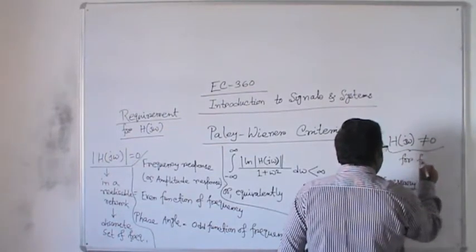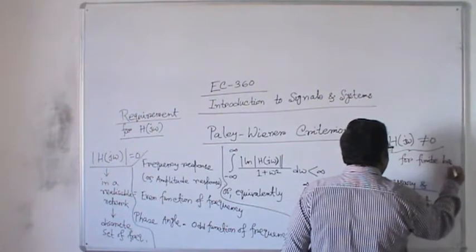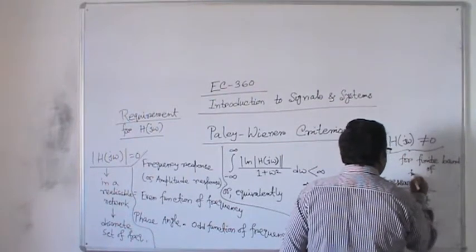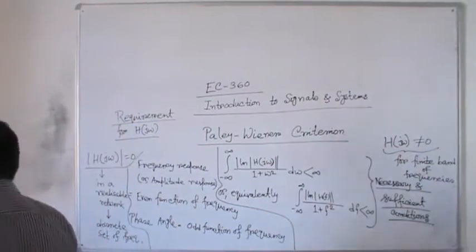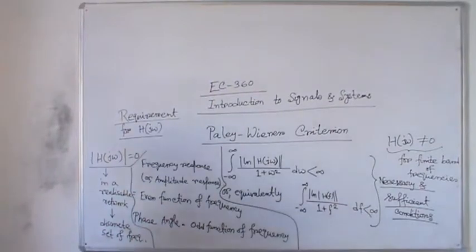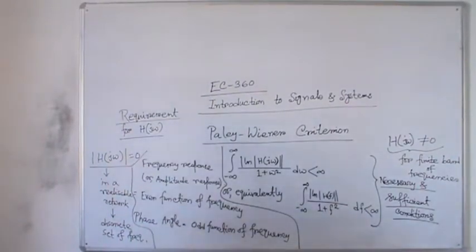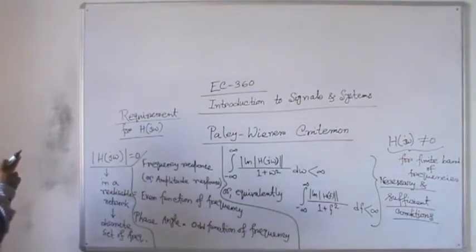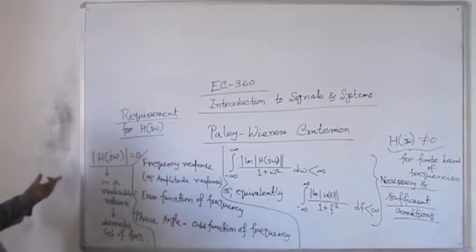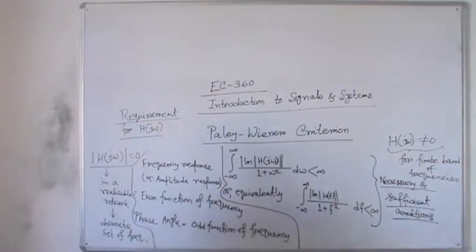It cannot have zero magnitude over a finite band of frequencies. Otherwise, the Paley-Wiener criterion is invalid. That is, if the magnitude of this realizable network will be zero over any finite band, then the log of this value will be infinity — in the Napier logarithm it will be infinity over that particular band — and consequently H(jω) is unrealizable.